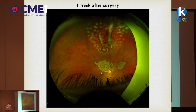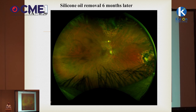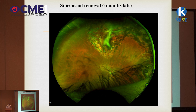I usually leave the oil in the eye for six months before removal. After oil removal, this patient's vision improved to 6/36. Much of the submacular blood had been absorbed, the scarring was clean, and the retina had nicely reattached. There was also development of an early cataract visible on the retinal image.